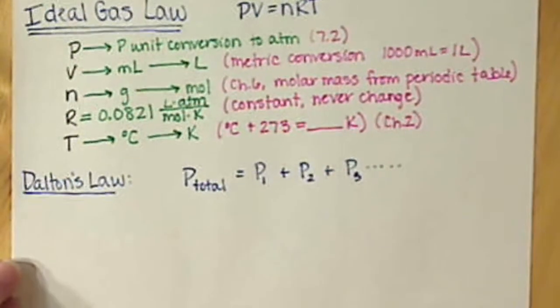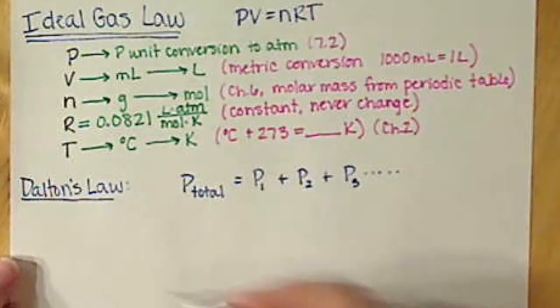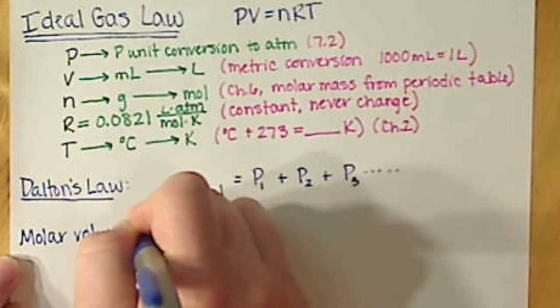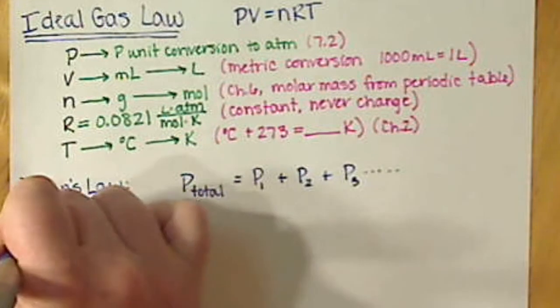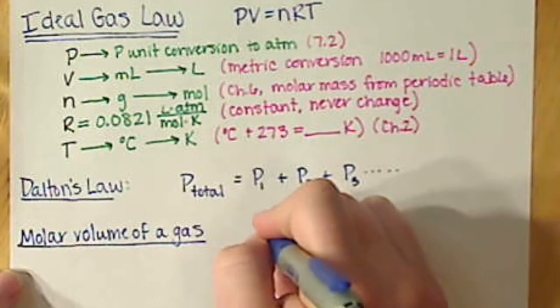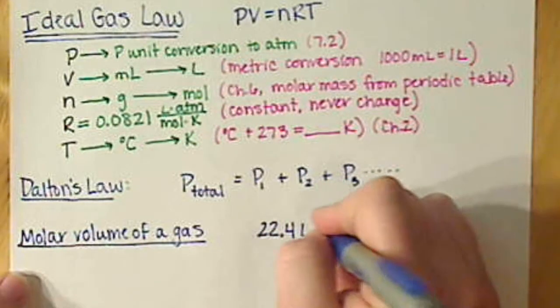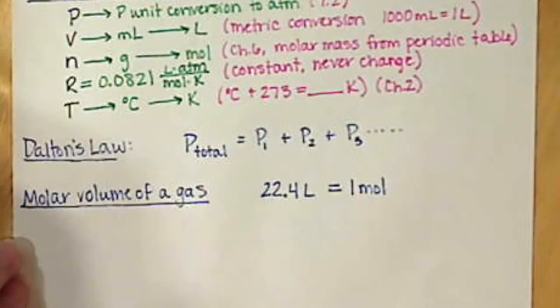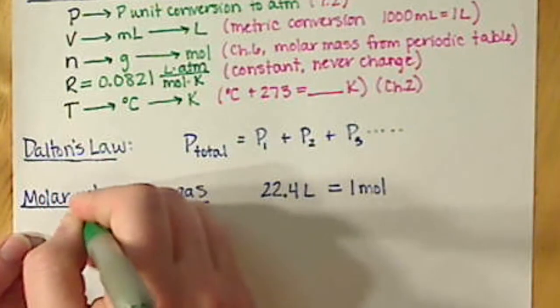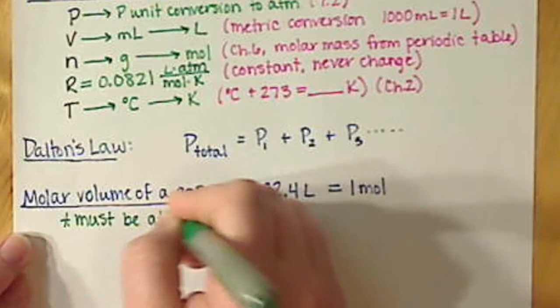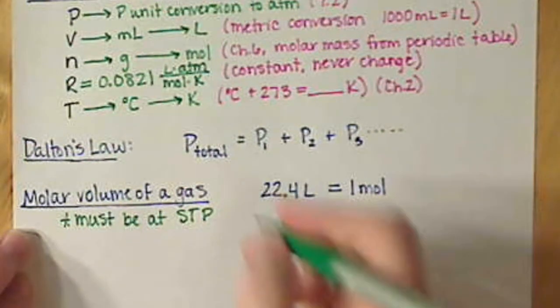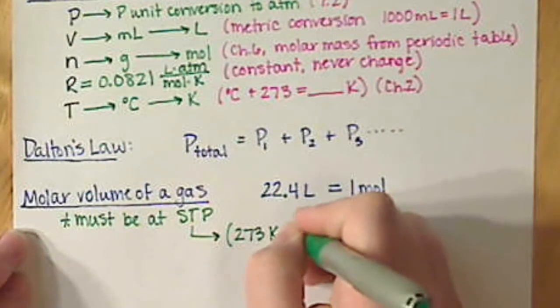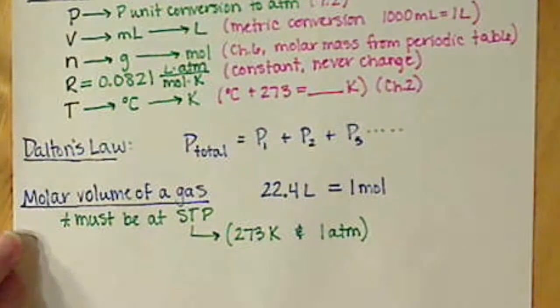Then kind of one last thing actually deals with the ideal gas law more, but that's our molar volume. That was where we had 22.4 liters of our gas is equal to one mole of our gas, and we had to make sure that we must be at STP, meaning we have to be at 273 Kelvin and one atmosphere, and we have to be at both of those in order to be able to use this. This is just a shortcut.